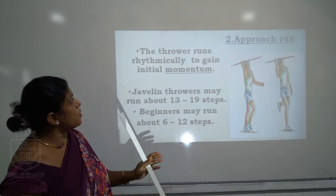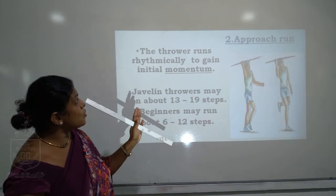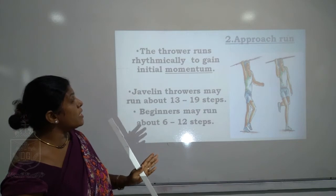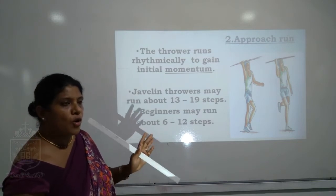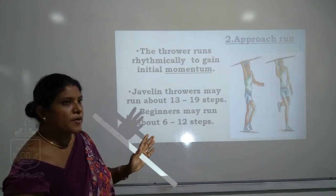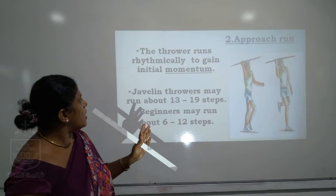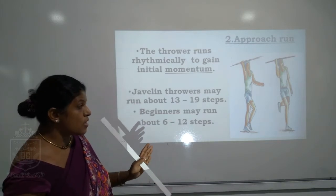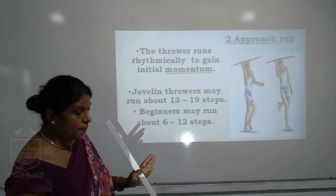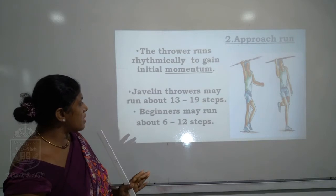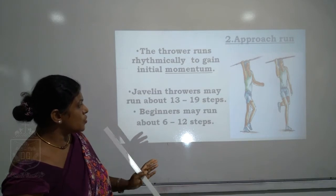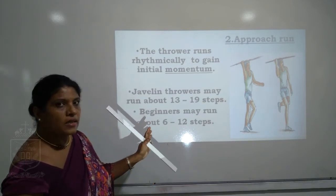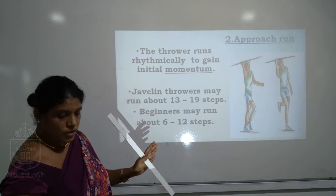Second: approach run. The thrower runs rhythmically to get initial momentum — momentum is a principle of biomechanics. Javelin throwers may run about 13 to 19 steps; beginners may run about 6 to 12 steps.